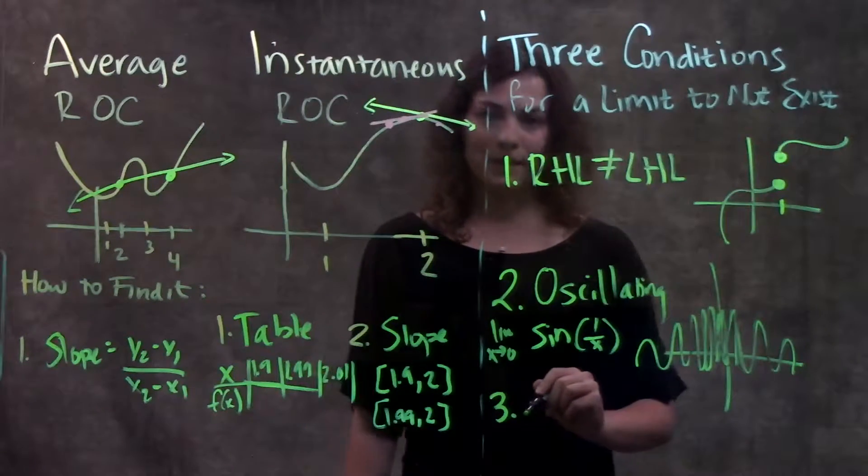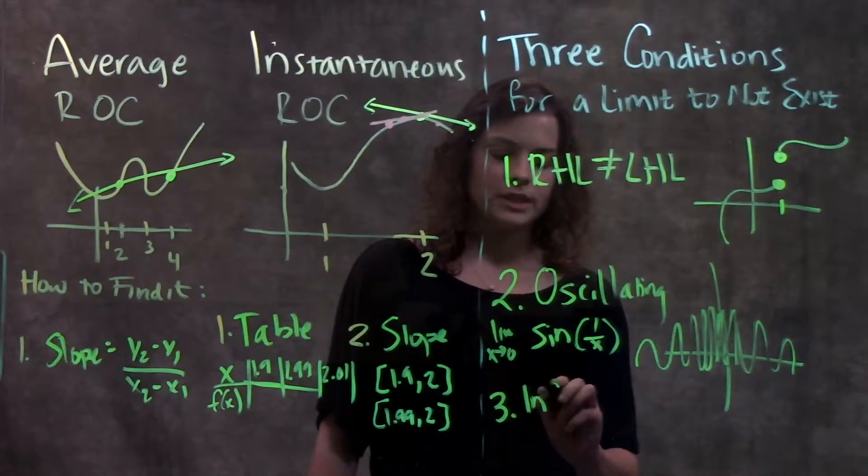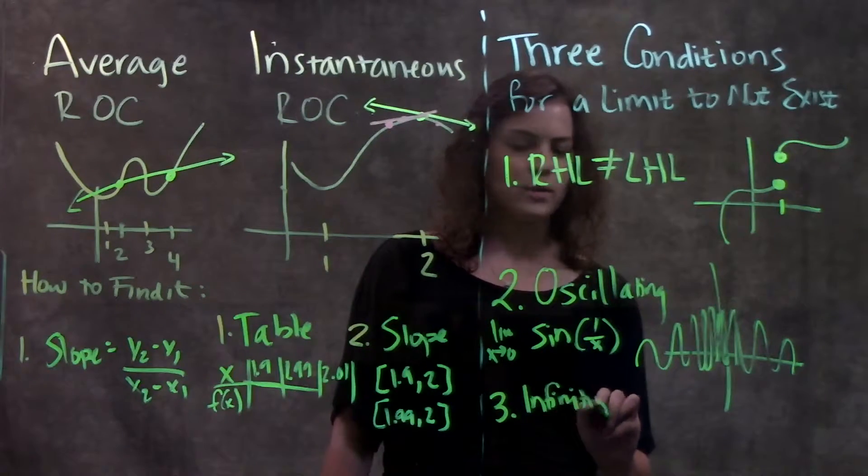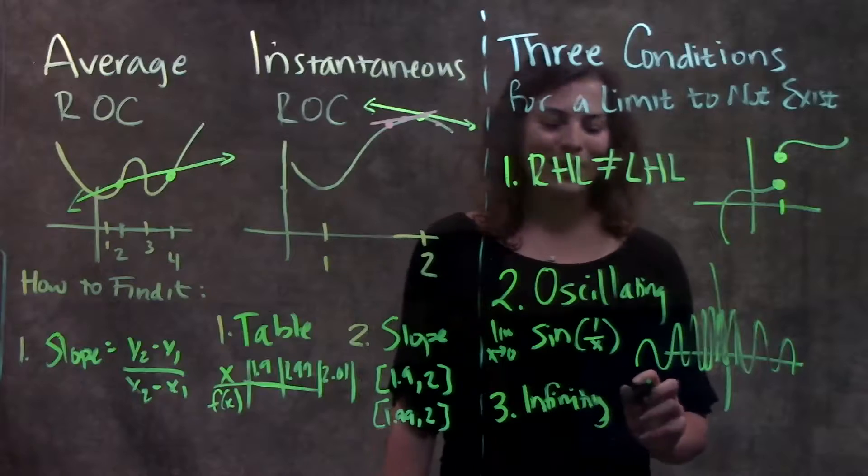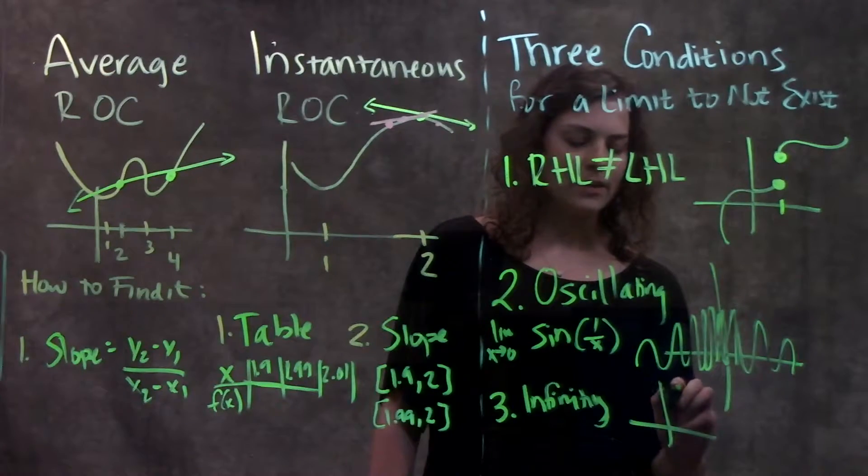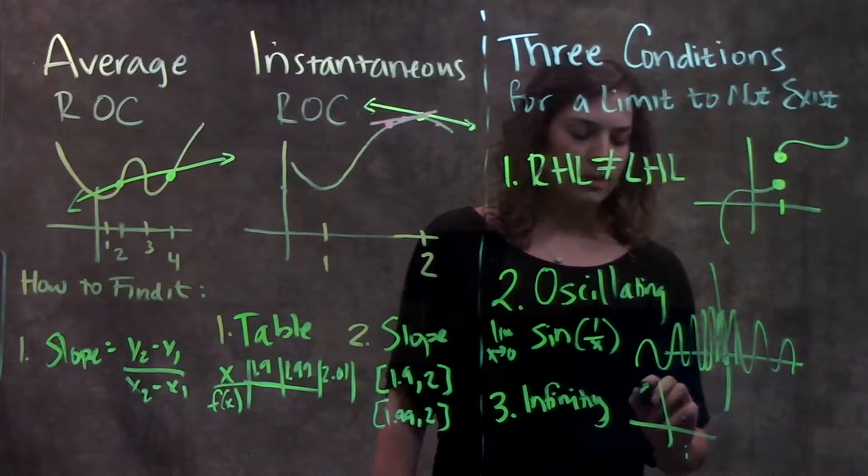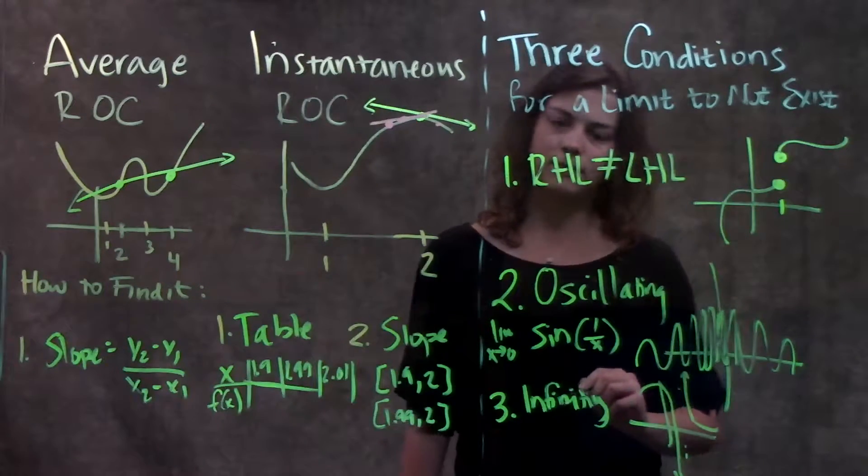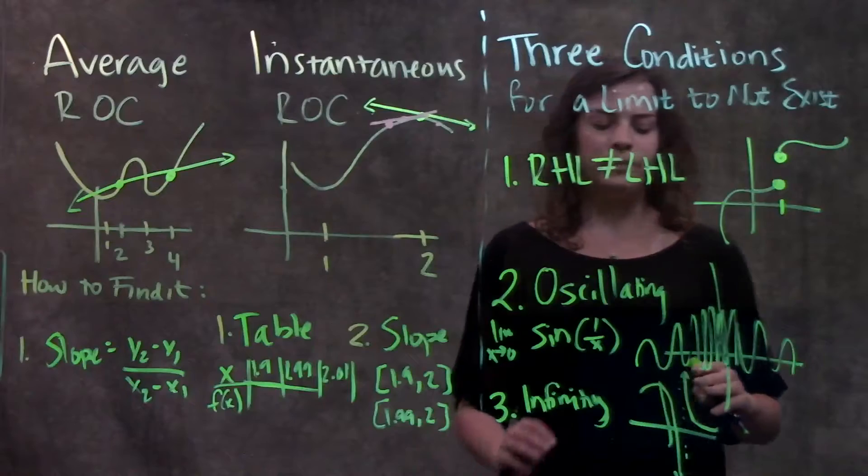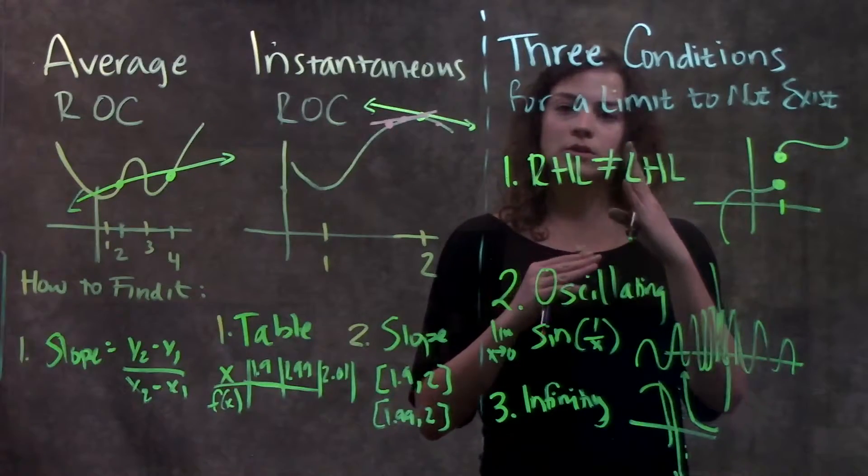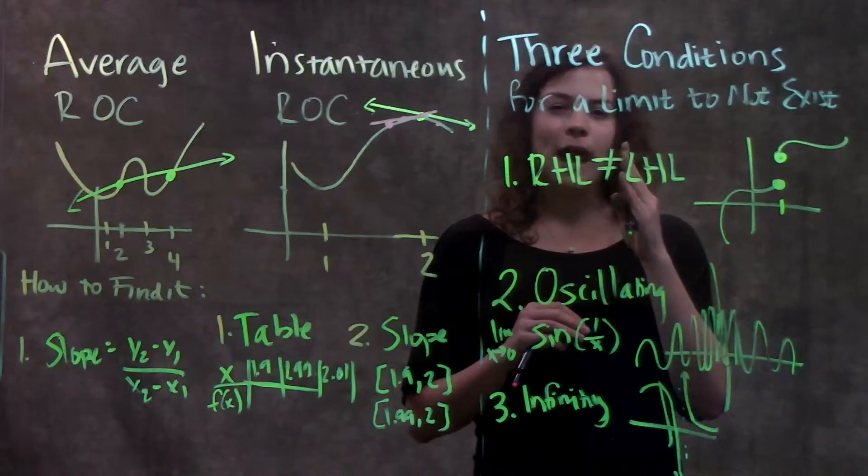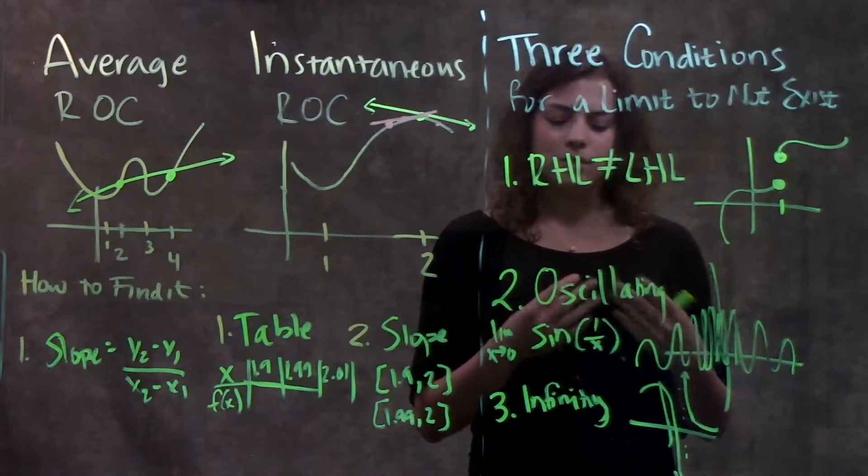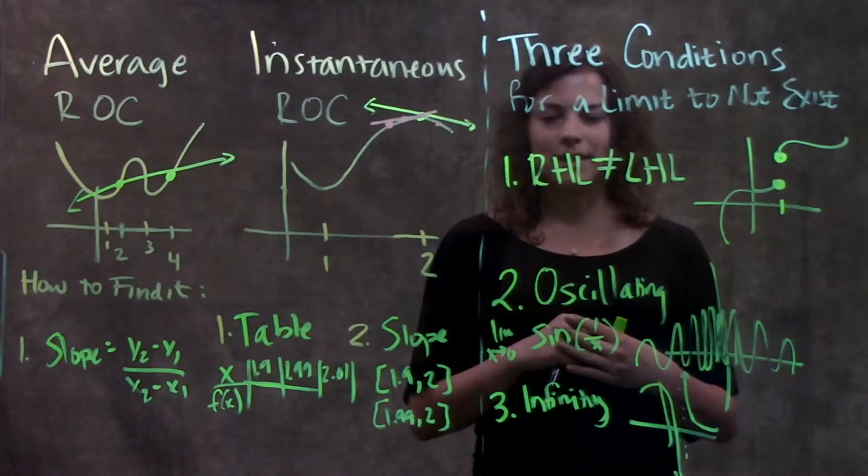Third condition for a limit to not exist is if it's approaching infinity. What this might look like on a graph is if there's an asymptote here, it could be approaching either negative infinity or it could be approaching positive infinity. Either way, the graph is going to start getting closer and closer to that asymptote, but it will never actually reach a value. So because of that, the limit does not exist in that case.